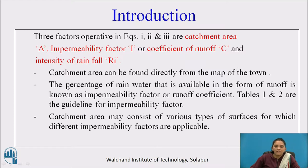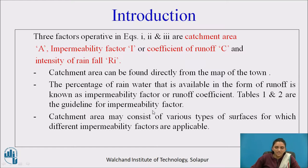The impermeability factor is the percentage of rainwater that is available in the form of runoff. Table 1 and Table 2 are guidelines for the impermeability factor. The entire catchment area may have many types of surfaces, so the area is divided into many parts.